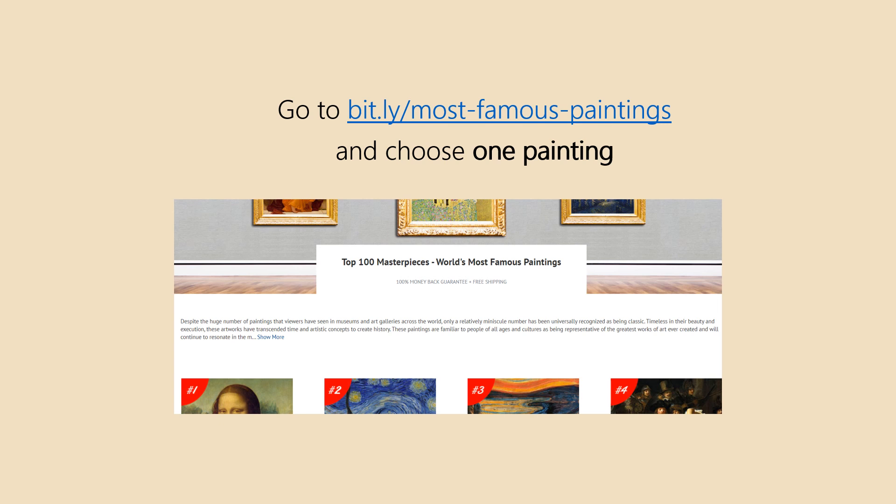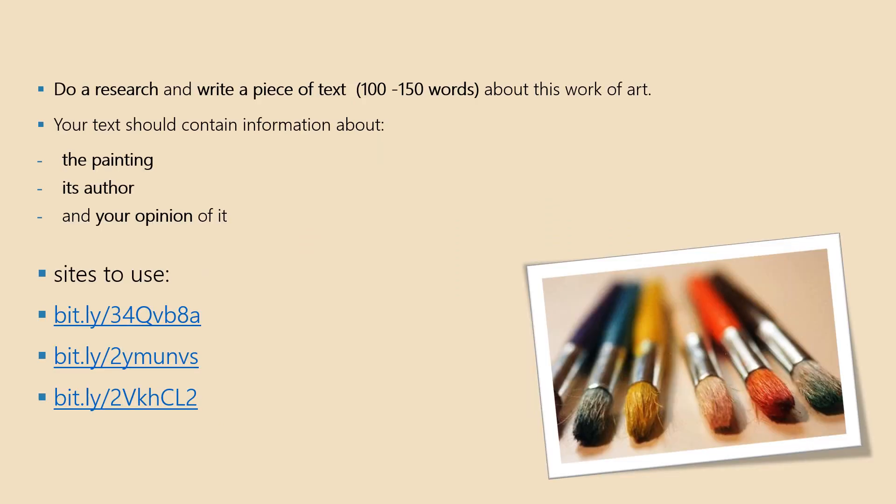Choose one painting to do a project work on it. Do research on the chosen painting and compose a text about this masterpiece. Your text should contain information about the painting itself — such as when it was painted, which period it belongs to, which technique was used, what artistic features are visible in the painting, and what it presents. You can also include some interesting facts about the artist and your opinion of it, whether you like it or not and why. Here are some sites that you can use for this research.